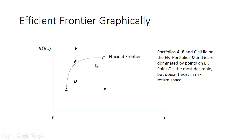Here are a bunch of different portfolios plotted. A, B, and C lie on the efficient frontier — they have the highest expected return for a given level of risk. Portfolio D is not as good because for the same level of risk you could have a higher expected return at B. Likewise with E. Portfolio F would be great — it has a higher expected return and a lower level of risk than B — but it doesn't exist, so you can't buy it.